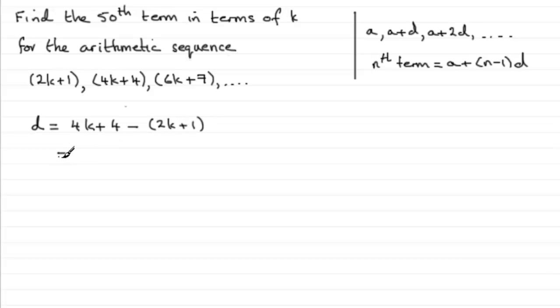And if we do that, we've got 4k plus 4, and then be careful here, this is minus 2k if we take the brackets away, and minus plus 1 is minus 1. And if we simplify this, we've got 2k and then 4 minus 1 leaves us with 3. So that's the common difference.